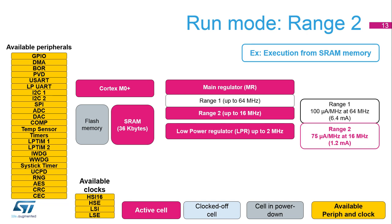In range 2, all peripherals can be active, but the flash memory cannot be programmed or erased. The run mode consumption is 75 microamps per MHz in range 2 at 16 MHz with the flash memory off.